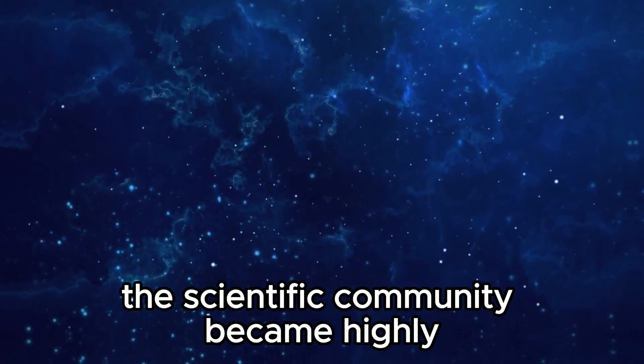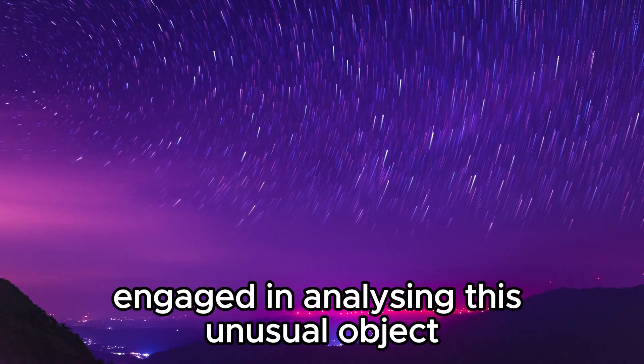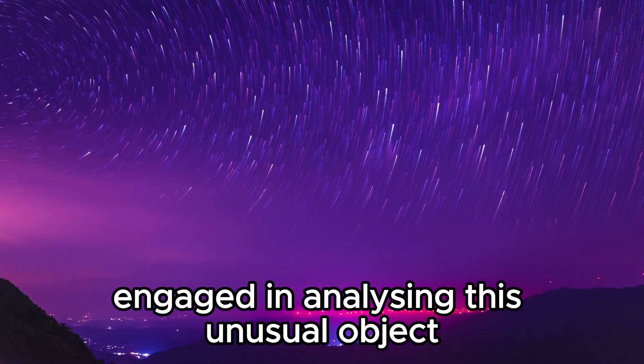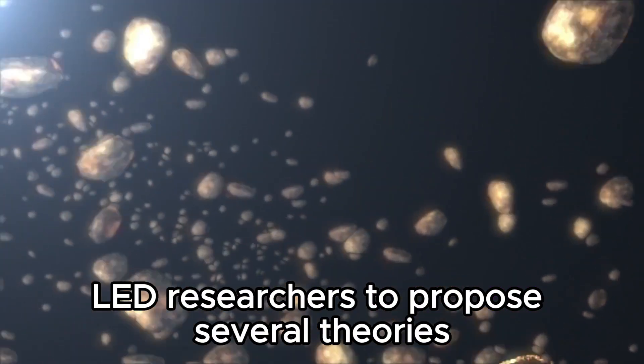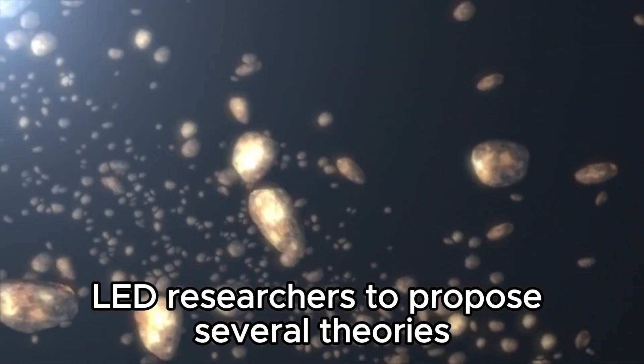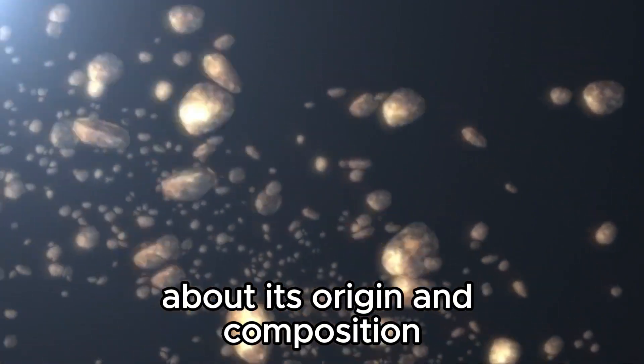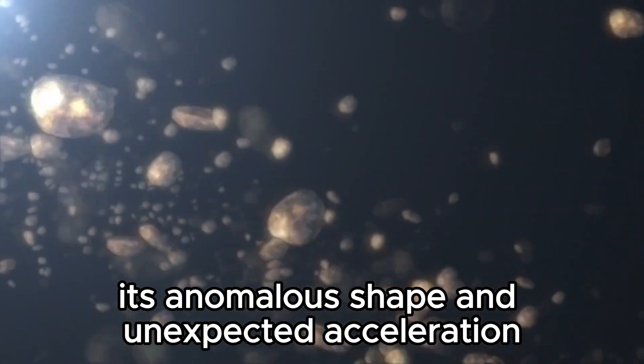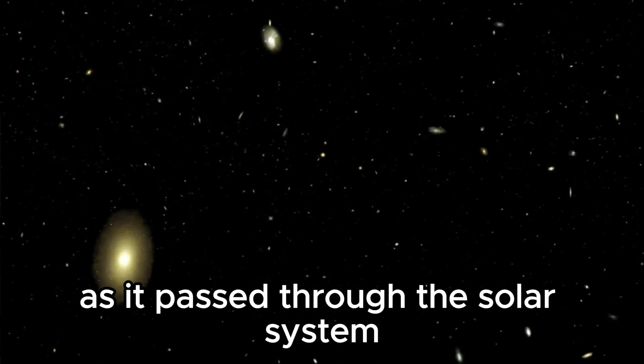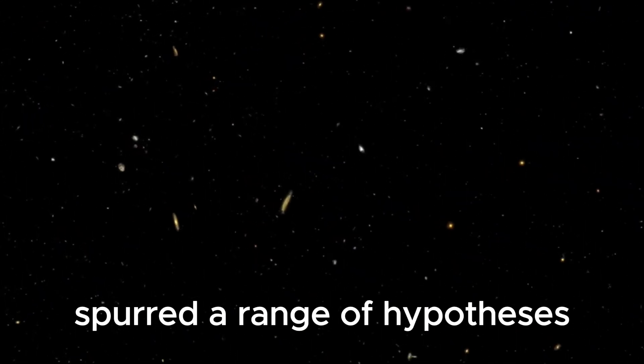The unique characteristics of Oumuamua led researchers to propose several theories about its origin and composition. Its anomalous shape and unexpected acceleration as it passed through the solar system spurred a range of hypotheses, including those involving exotic materials or even artificial origins.